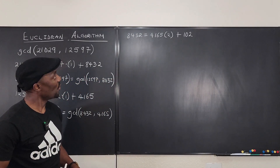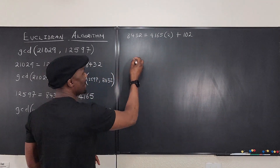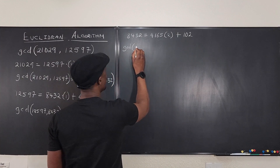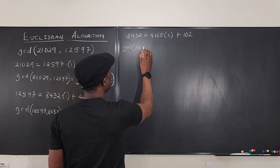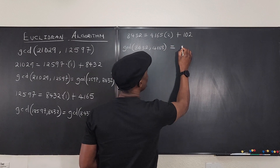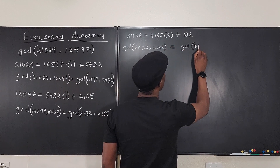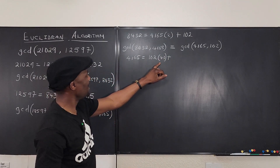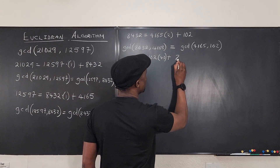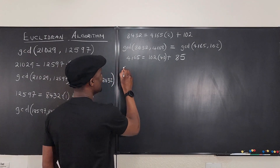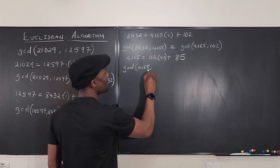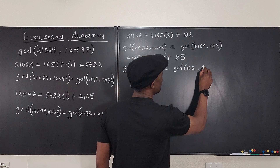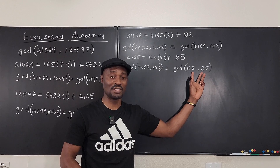The remainder is 102. So the GCD of 8432 and 4165 equals the GCD of 4165 and 102. The numbers are getting smaller. 4165 divided by 102: I need about 40 of these, and the remainder is 85. So the GCD of 4165 and 102 is the same as the GCD of 102 and 85.